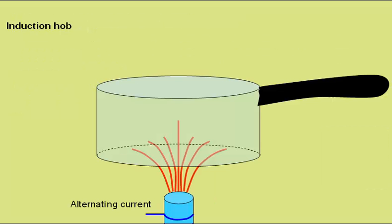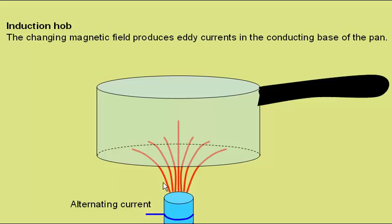The induction hob uses eddy currents to heat food. The changing magnetic field, produced by an alternating current in this solenoid, produces eddy currents within the base of the pan.